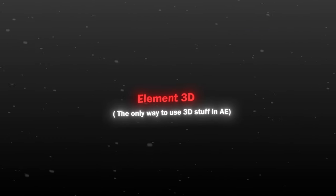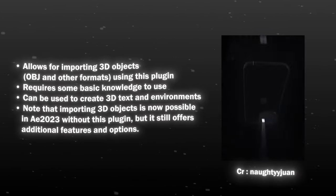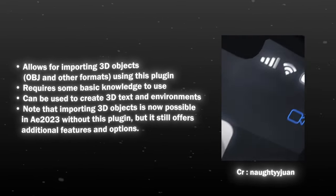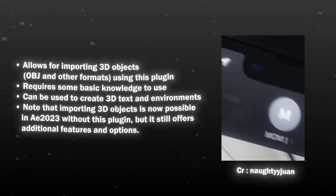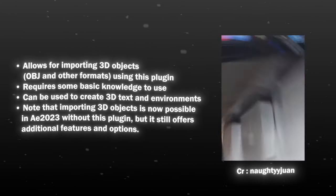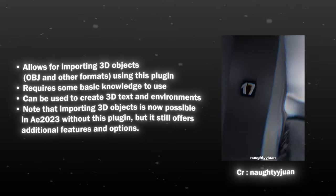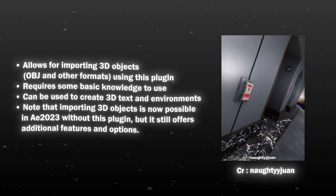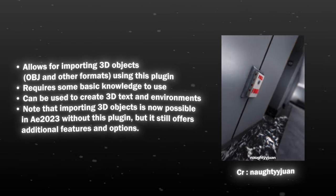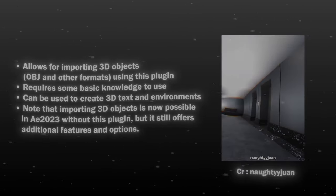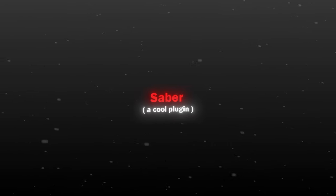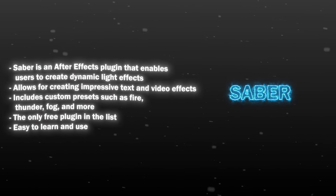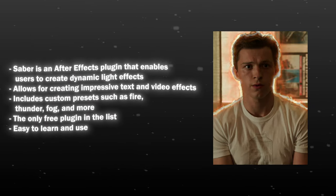Element 3D is a plugin to use 3D stuff in After Effects and to create awesome and good-looking edits. There is no other way to import 3D objects in After Effects without Element 3D. Saber is a plugin to make some cool coloring strokes and effects as shown here.